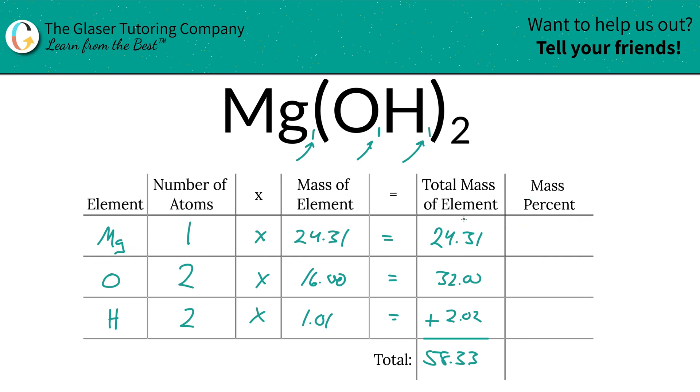Now I'm going to add a column to the table to find the mass percents. To find the mass percents of each, we're going to take, for magnesium, the total mass of magnesium—24.31 units of mass—and divide it by the total mass of the entire compound. Then just simply multiply that by 100. It's a fraction, right? Part over whole times 100.